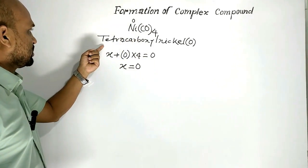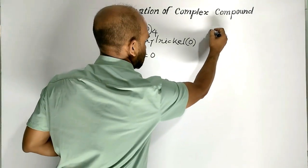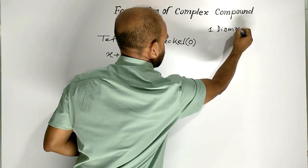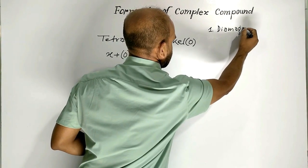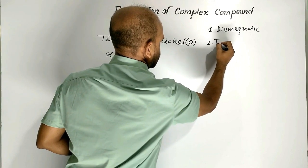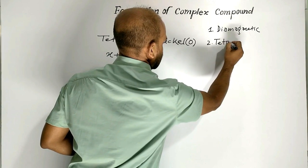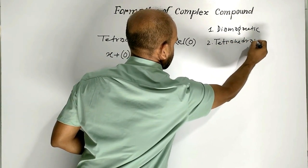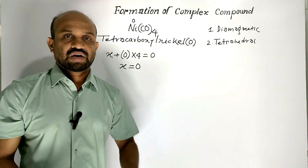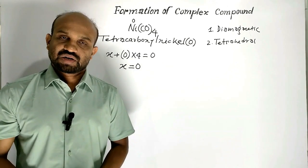That is why its name is tetracarbonyl nickel(0). This compound is diamagnetic in nature and tetrahedral in shape. Let us see this matter in detail.